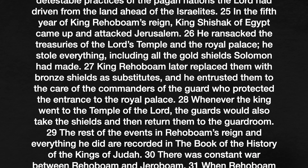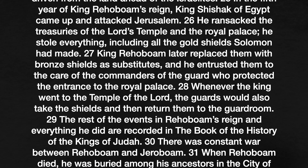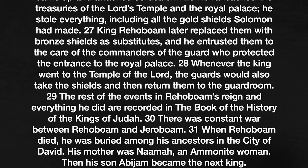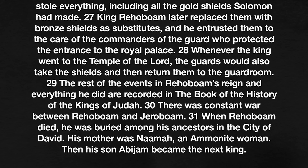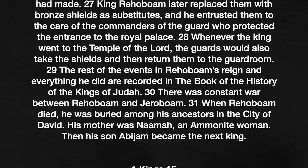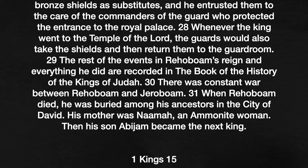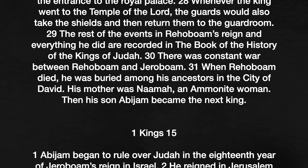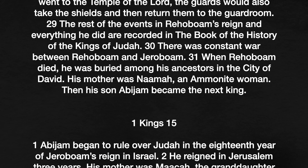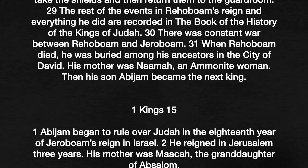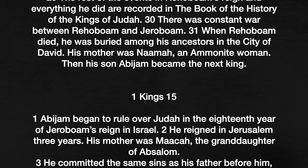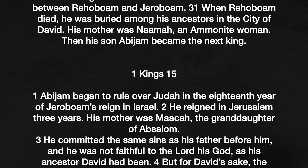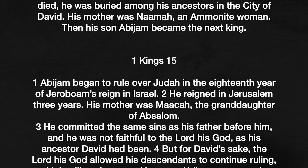In the fifth year of King Rehoboam's reign, King Shishak of Egypt came up and attacked Jerusalem. He ransacked the treasuries of the Lord's temple and the royal palace, stealing everything, including all the gold shields Solomon had made. King Rehoboam later replaced them with bronze shields as substitutes and entrusted them to the commanders of the guard who protected the entrance to the royal palace. Whenever the king went to the temple of the Lord, the guards would take the shields and then return them to the guard room. The rest of the events of Rehoboam's reign are recorded in the book of the history of the kings of Judah. There was a constant war between Rehoboam and Jeroboam. When Rehoboam died, he was buried among his ancestors in the city of David. Then his son Abijam became the next king.